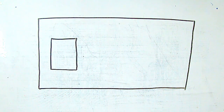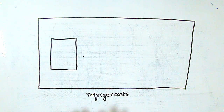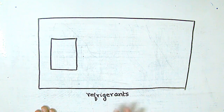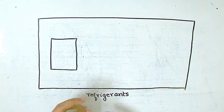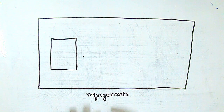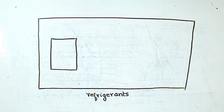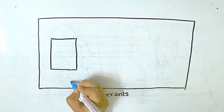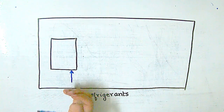We use refrigerators with chemicals called refrigerants. Refrigerants are normally in a gaseous or vapor state at atmospheric room temperature. But we can change them into liquid. When changed to liquid, the temperature becomes very low, so it will be very cold.